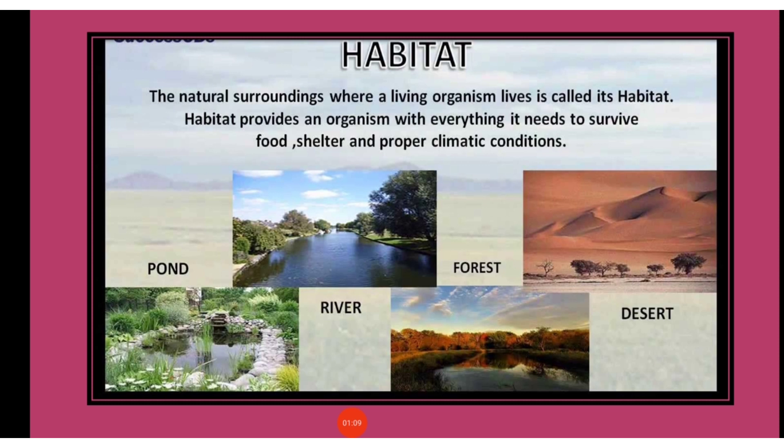What is Habitat? The region or place where an organism lives is termed as Habitat. Habitat provides an organism everything it needs to survive, like food, shelter, and proper weather conditions such as rainfall and heat.